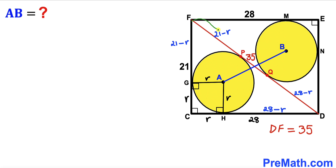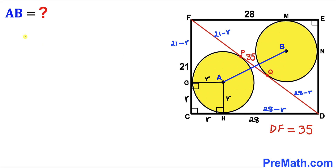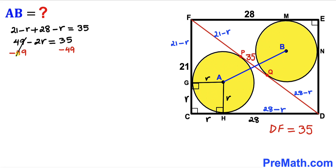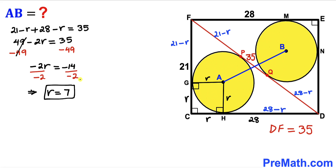The whole diagonal DF is the sum of segments FB and DE: (21 minus r) plus (28 minus r) equals 35. Combining like terms: 49 minus 2r equals 35. Subtracting 49 from both sides gives negative 2r equals negative 14, so dividing by negative 2, the radius r equals 7 units.